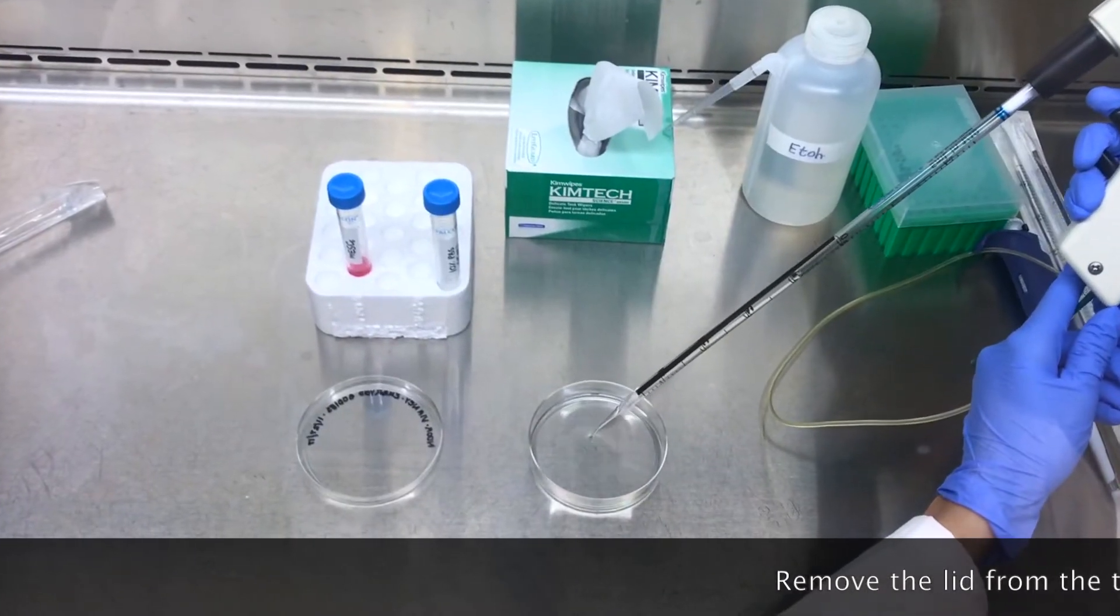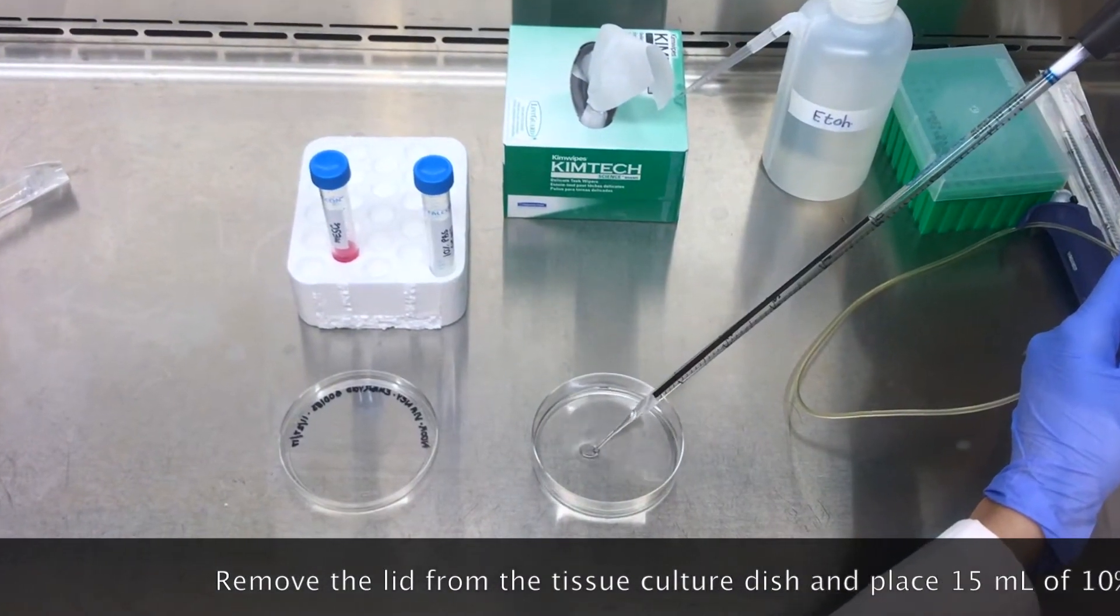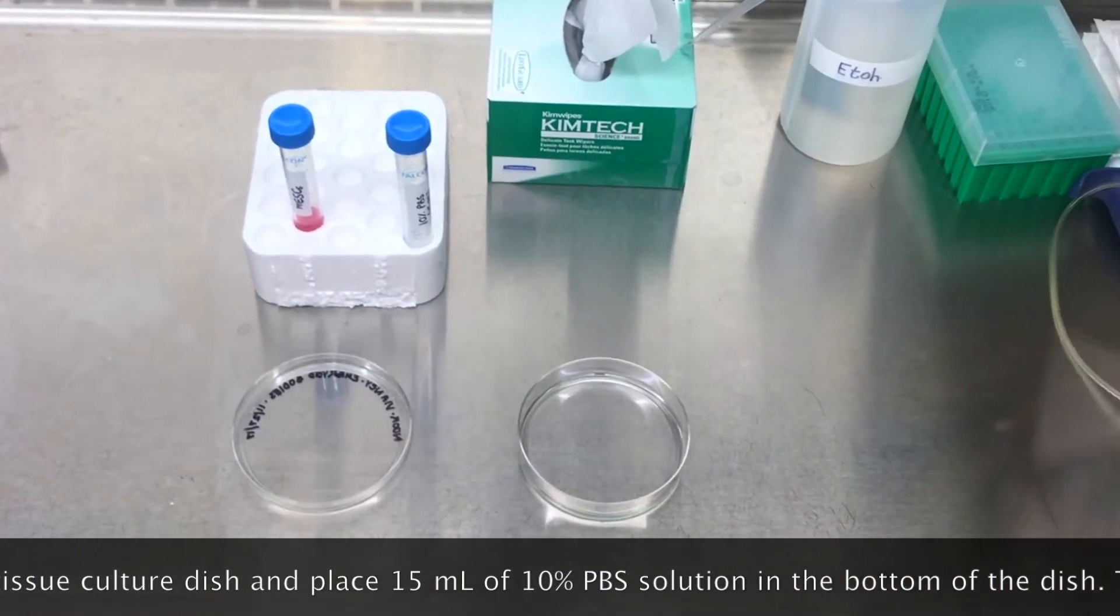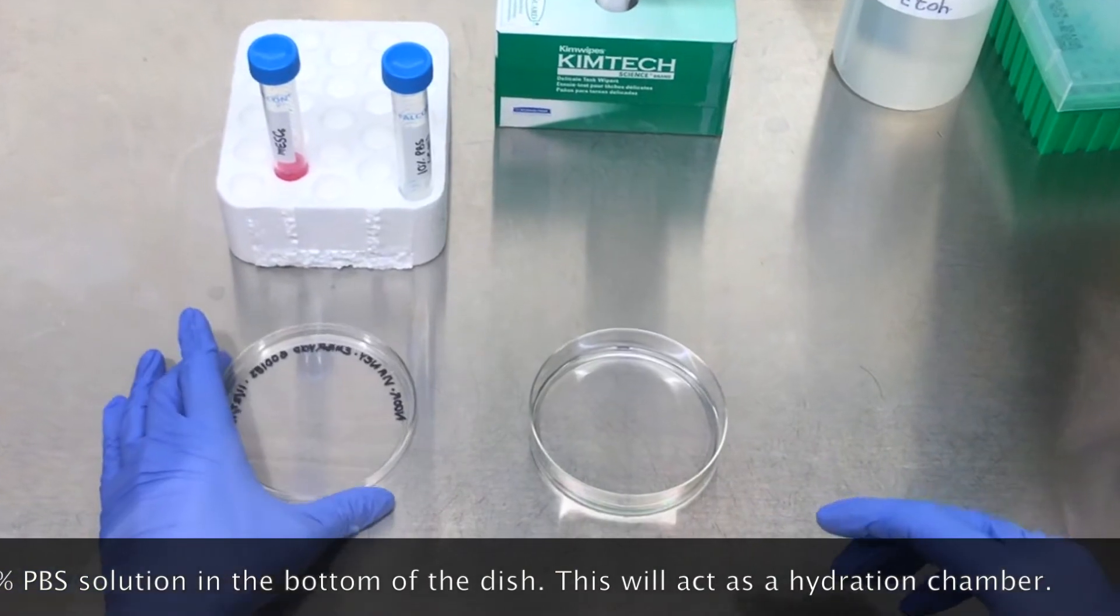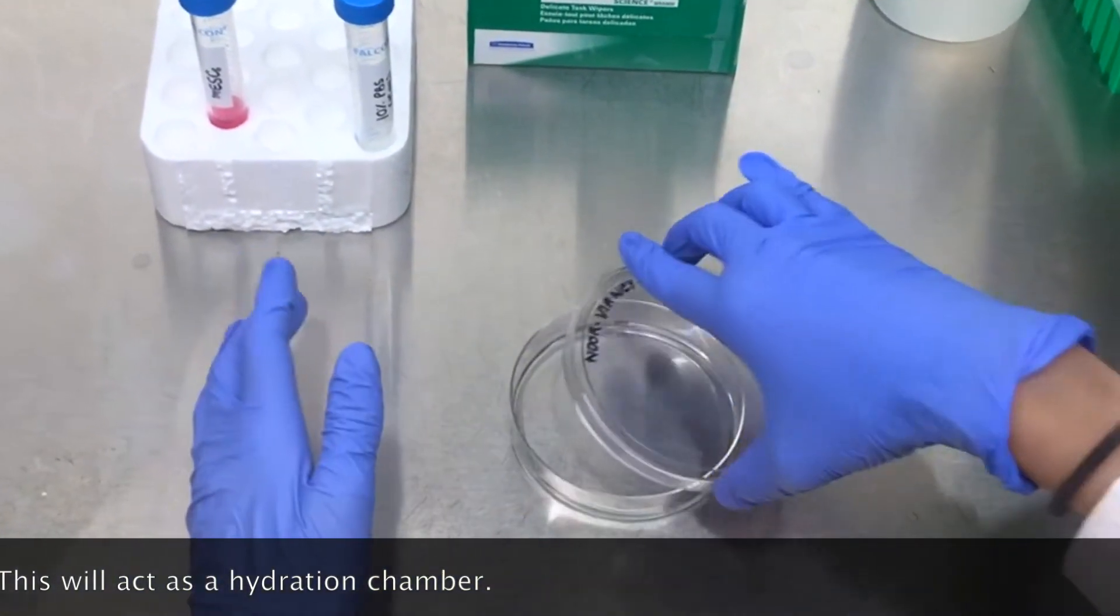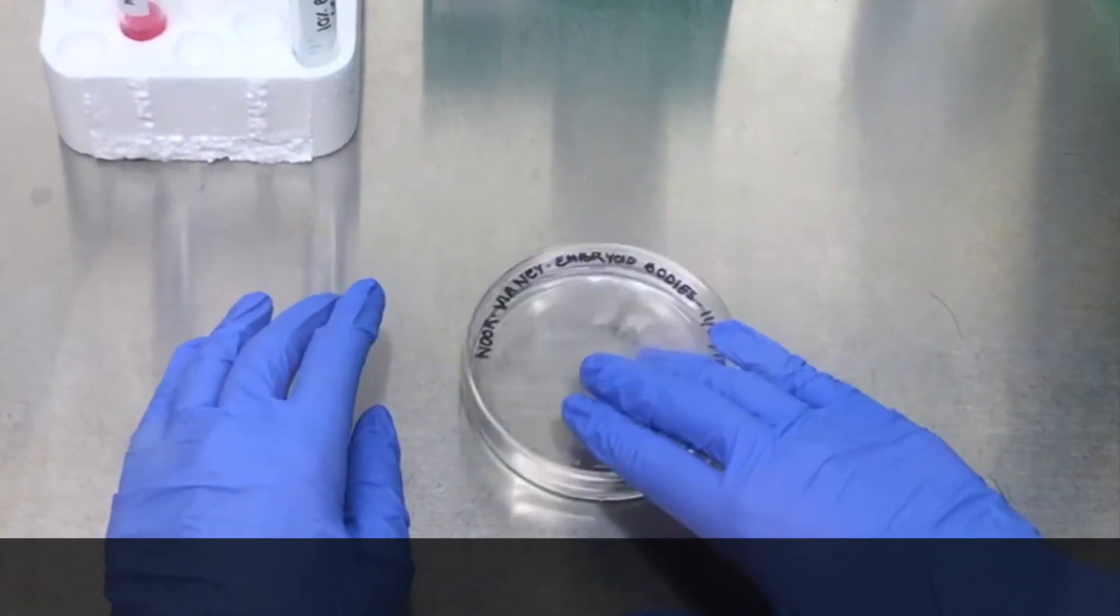Using proper aseptic technique, transfer 15 milliliters of 10% PBS into the bottom half of a petri dish and make sure that it is covering the bottom.